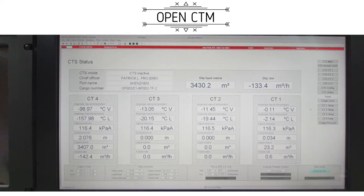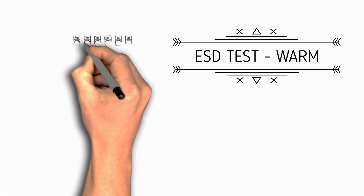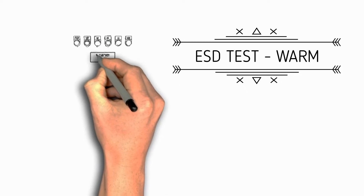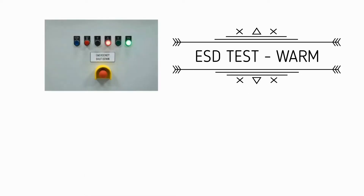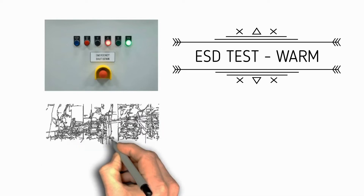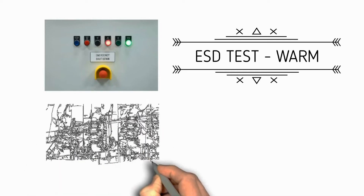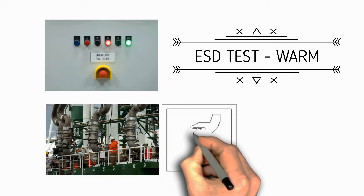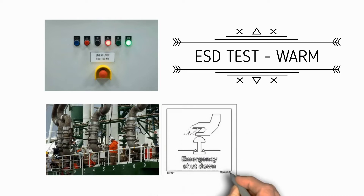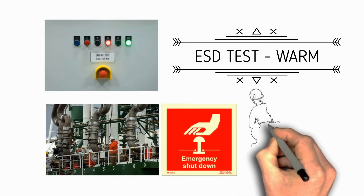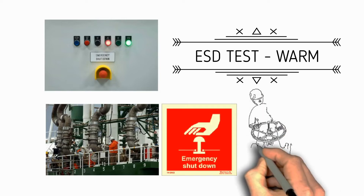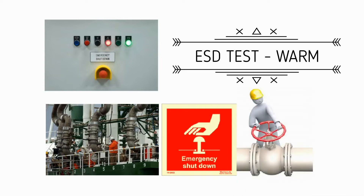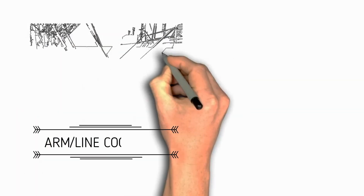Next is ESD test warm. The Emergency Shutdown system is a quick-closing system that may be activated automatically or manually, closing all deck valves and shutting down all cargo machinery. The 'warm' condition means the cargo lines or cargo manifold are still warm with no passing liquid during testing. The time it takes to close the manifold valves must not exceed 30 seconds — if it does, the valve closing must be adjusted prior to commencing cargo operations.